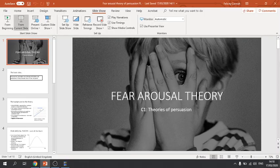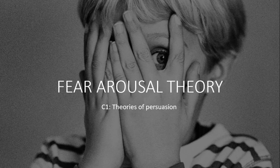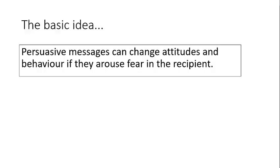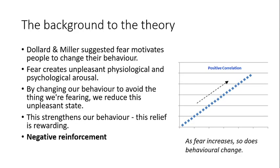This is Applied Psychology BTEC, Year 2, Unit 3, Section C1, where we look at theories of persuasion. This is fear arousal theory, and we're going to look at the theory and also the research that goes with it. The basic idea is that persuasive messages that make the recipient scared are more likely to change attitudes and behaviours — it's all about whether we're arousing fear in people and how persuasive that is.